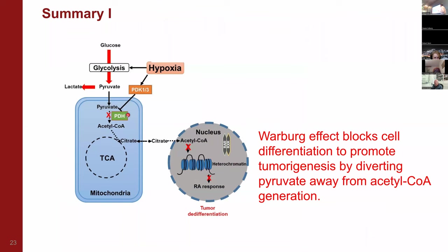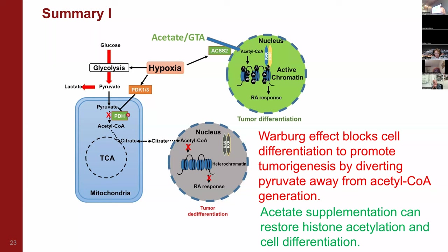To summarize the first part: the key of the Warburg Effect is to block cell differentiation and promote tumorigenesis by diverting pyruvate away from acetyl-CoA generation. Under hypoxia, induction of PDK1 and PDK3 phosphorylates and inhibits PDH, reducing cellular acetyl-CoA and citrate levels, reducing histone acetylation, and silencing differentiation markers. Because hypoxia also induces ACSS2, we can give cells acetate, which restores cellular acetyl-CoA levels, active chromatin conformation, and normal cell differentiation.